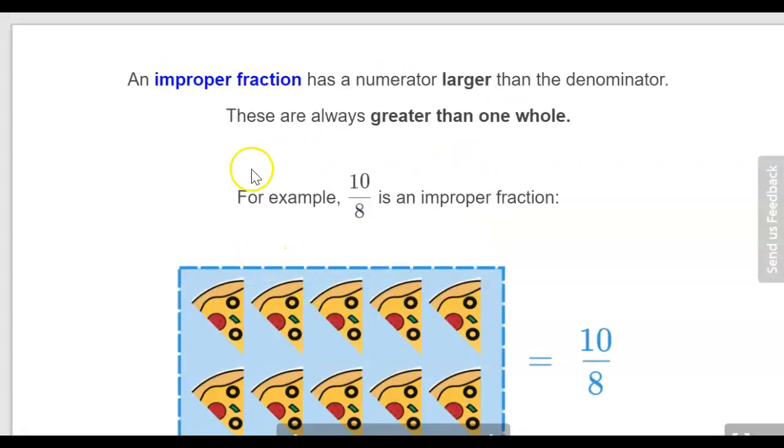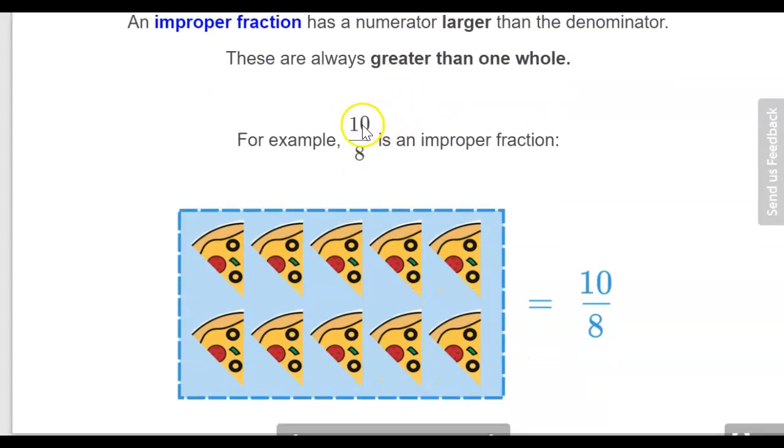The second type of fraction is an improper fraction, where the numerator is larger than the denominator, and these types of fractions represent a value which is always greater than a whole. So 10 eighths is greater than a whole. 8 eighths would be a whole and then we have two extra parts. So this is essentially saying one whole and then we have two eighths.